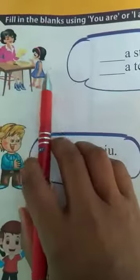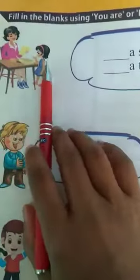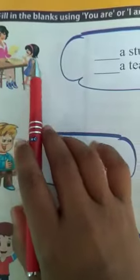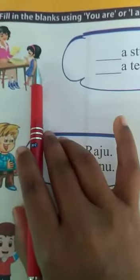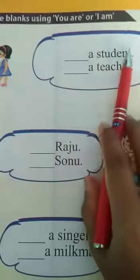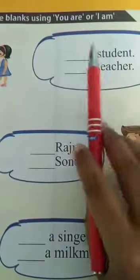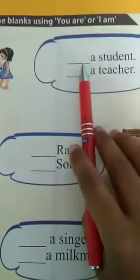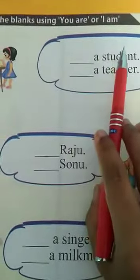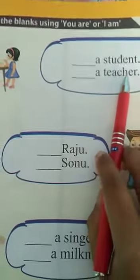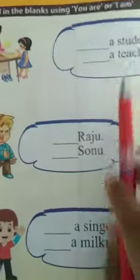In this picture, ye picture mein aap dhekhte hoongi — ye teacher aur ye student hai. Then, what we will write here? Here: you are a student, I am a teacher. Aap eek vidiyarthi hai, mai eek sikshika hoongi. Thickhe.